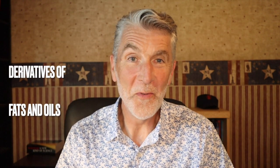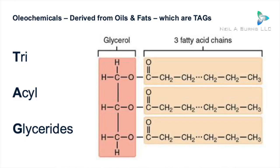Oleochemicals are derived from fats and oils, which in this context are triacylglycerides or TAGs. There's a glycerol backbone — three carbons — and to each of those is attached a fatty acid. They can be the same or different fatty acids, usually a mixture of varying types, chain lengths, and degrees of saturation. They can be animal or vegetable in origin.